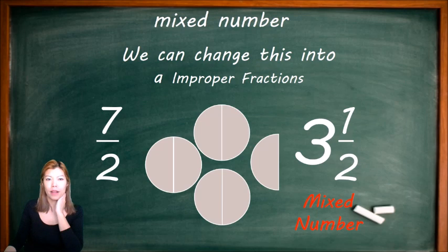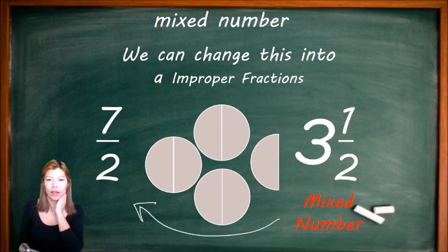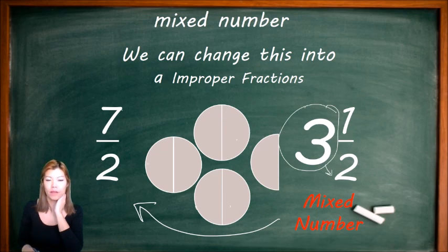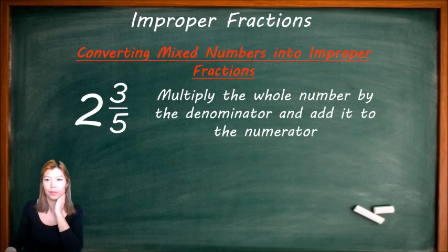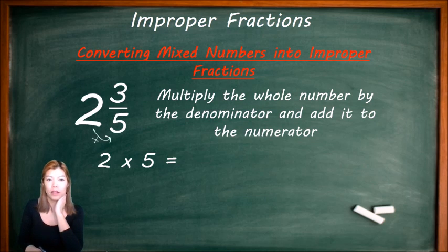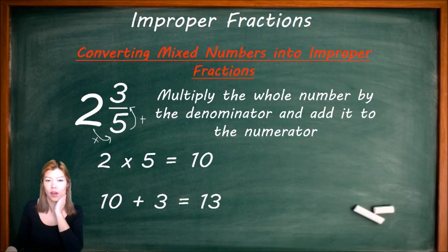We can also change a mixed number into an improper fraction — going backwards. To go from 3 and a half to 7 over 2: take the 3 and multiply by the number of halves, which is 2, giving 6. Then add the numerator: 6 plus 1 is 7. So to go from a mixed number to an improper fraction, multiply the whole number by the size of the pieces and add the remainder. For example, 3 times 2 is 6 plus 1 gives 7 over 2. Let's try 2 and 3 over 5: 2 times 5 is 10, then add the top value 3, giving 13 over 5.